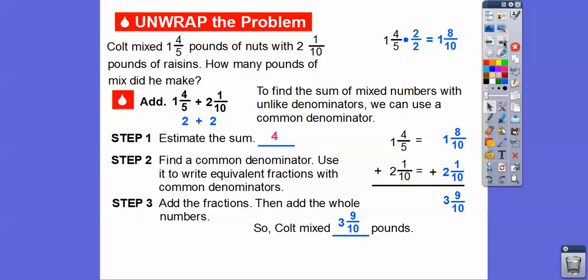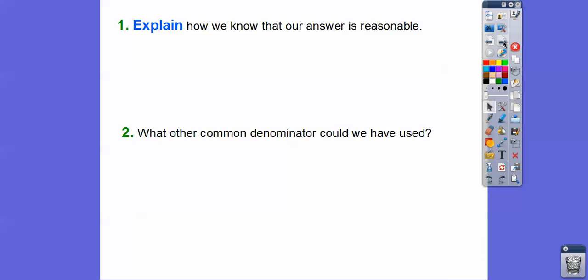So Colt mixed 3 and 9 tenths pounds of mix of nuts and raisins. So it sounds like gorp. Gorp is what we used to do in a trail mix that we'd go hiking with. So explain how we know that our answer was a reasonable answer. Well, here is our estimate. Our estimate was 4 right there.